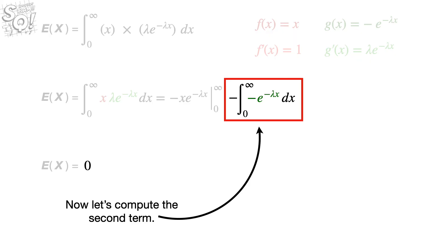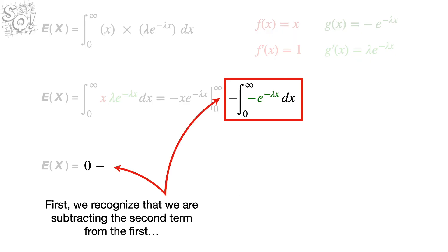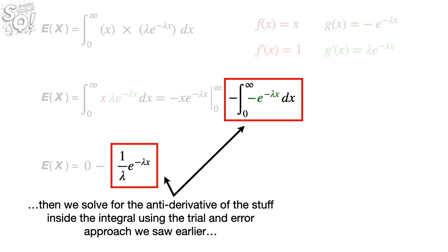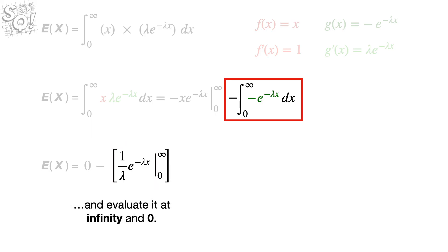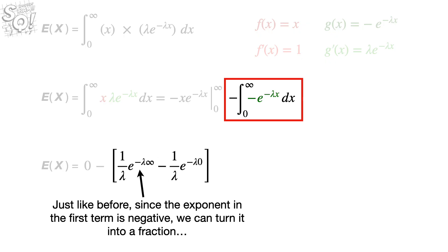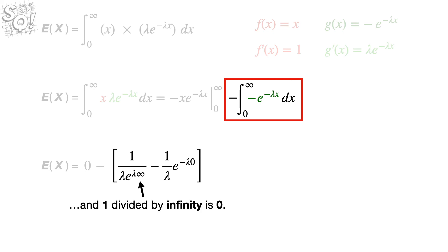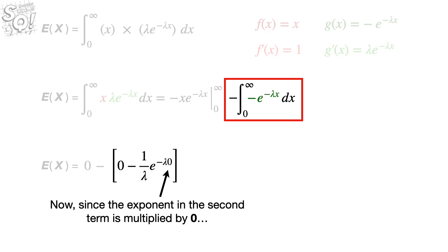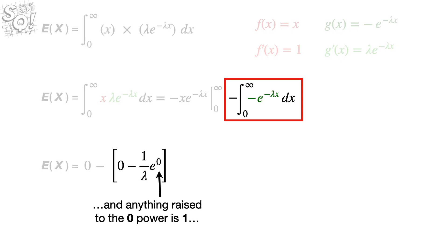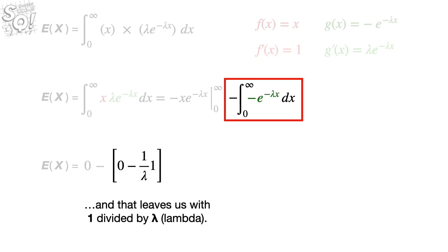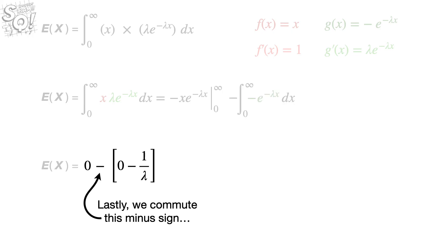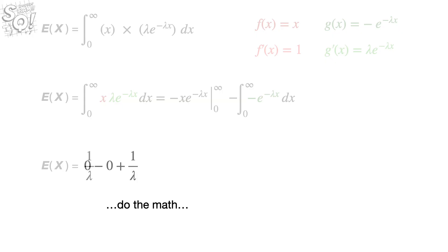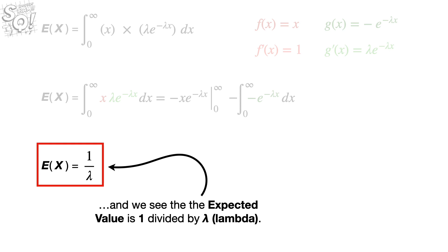For the second term, we recognize we are subtracting it from the first. We solve for the antiderivative of the integrand using the trial-and-error approach, then evaluate at infinity and 0. Since the exponent in the first term is negative, we turn it into a fraction: 1 divided by infinity equals 0. In the second term, the exponent is multiplied by 0, making the whole exponent 0, and anything raised to the 0 power is 1 — leaving us with 1 divided by lambda. Computing the minus sign, the expected value equals 1 divided by lambda.